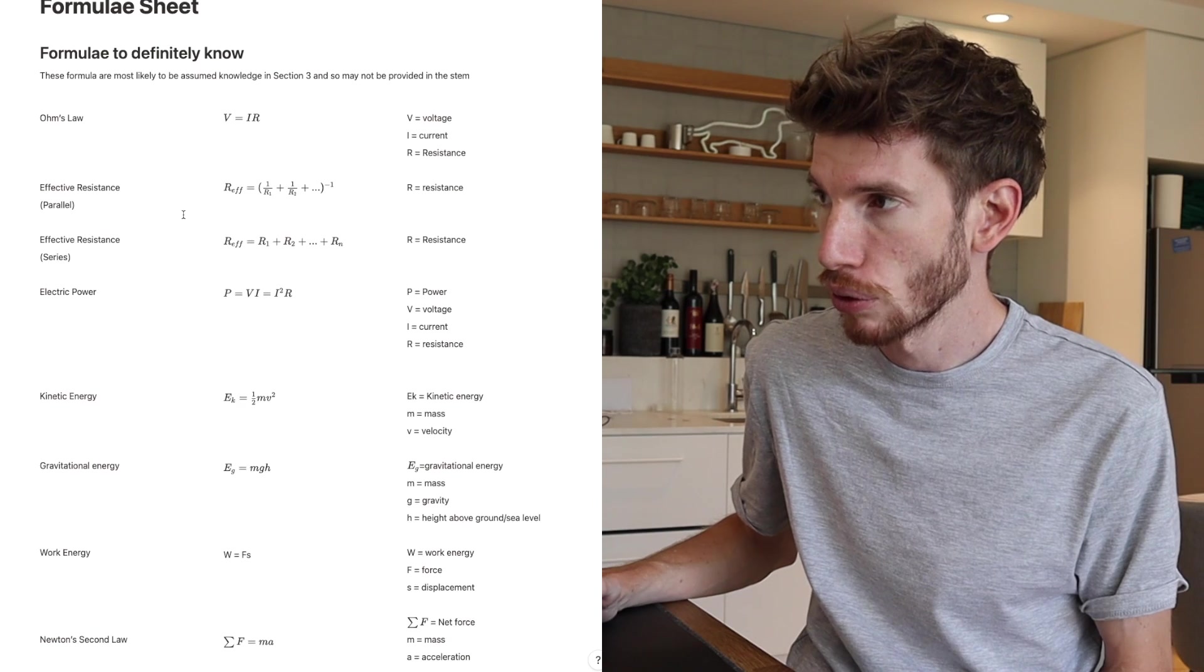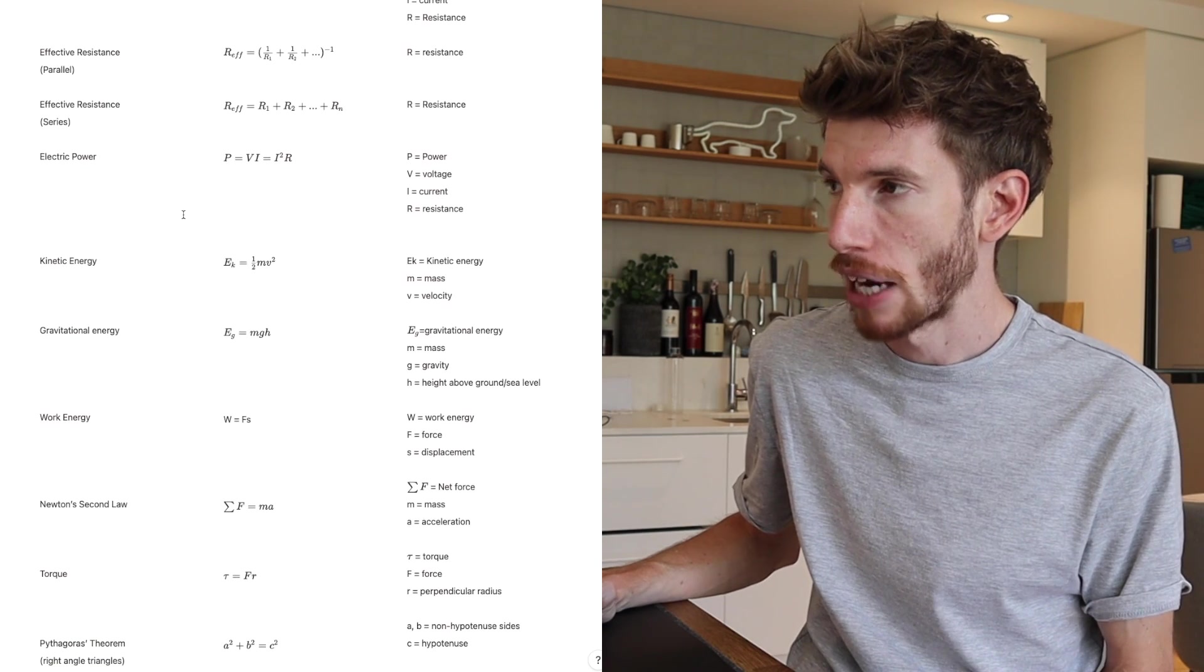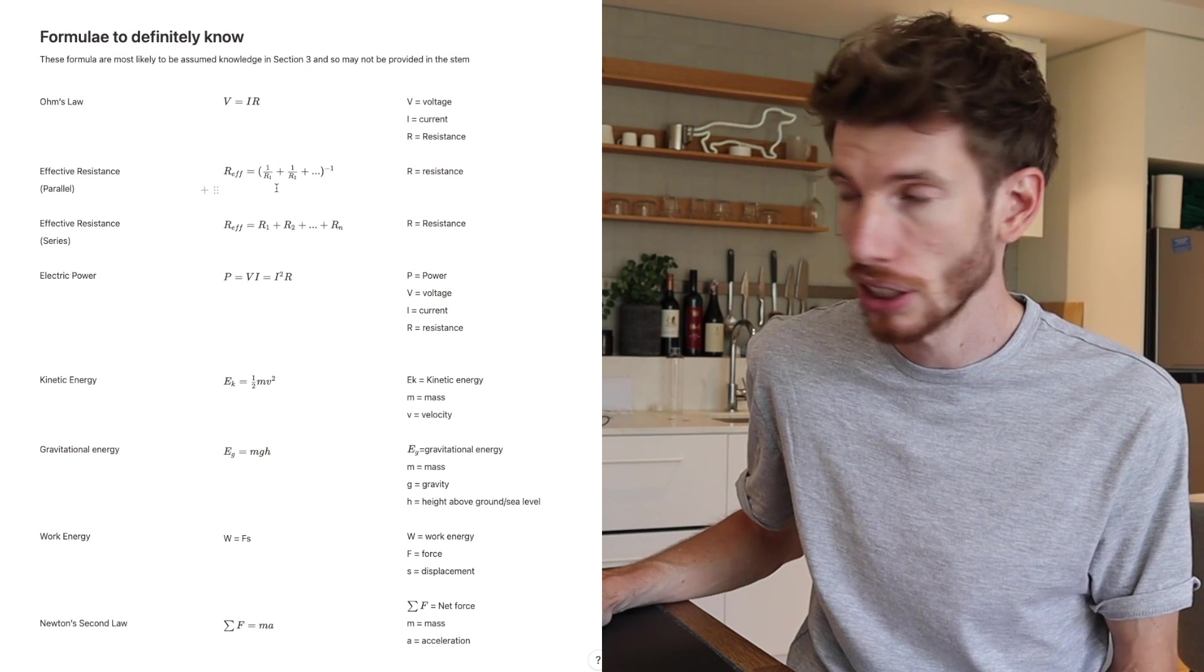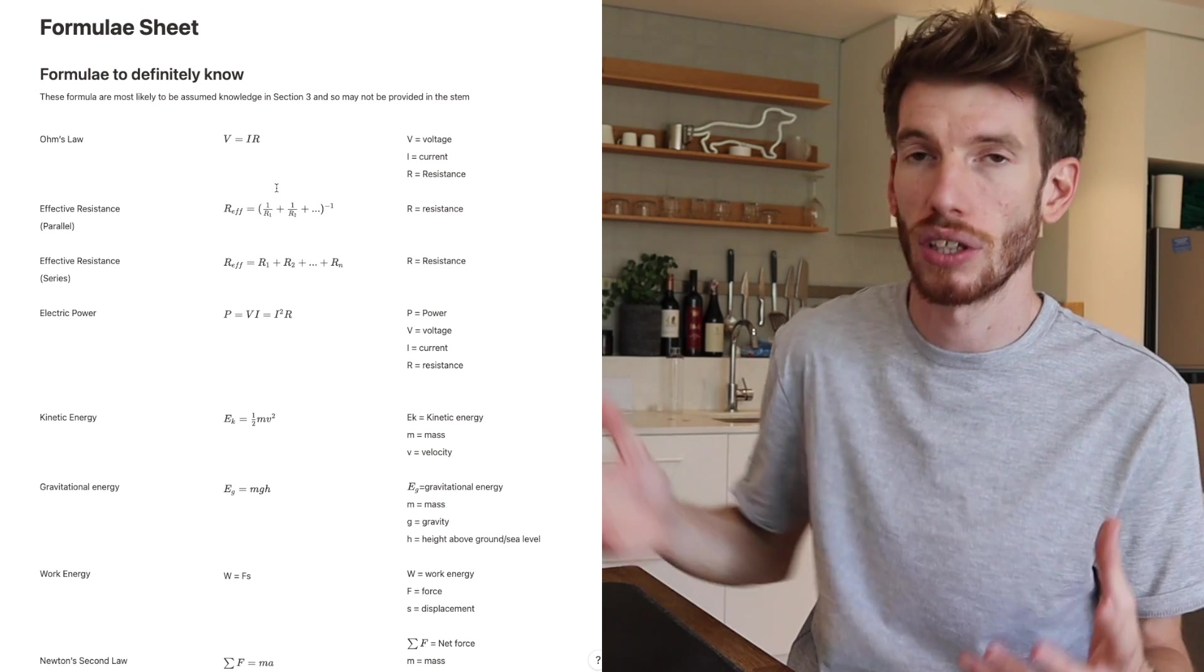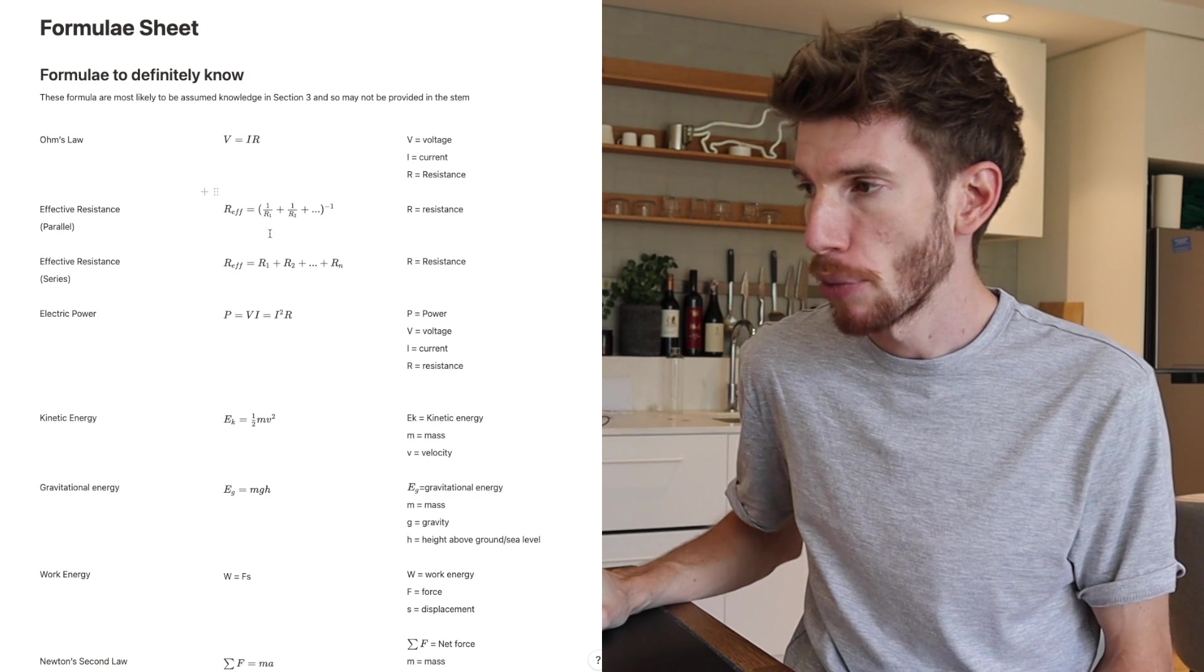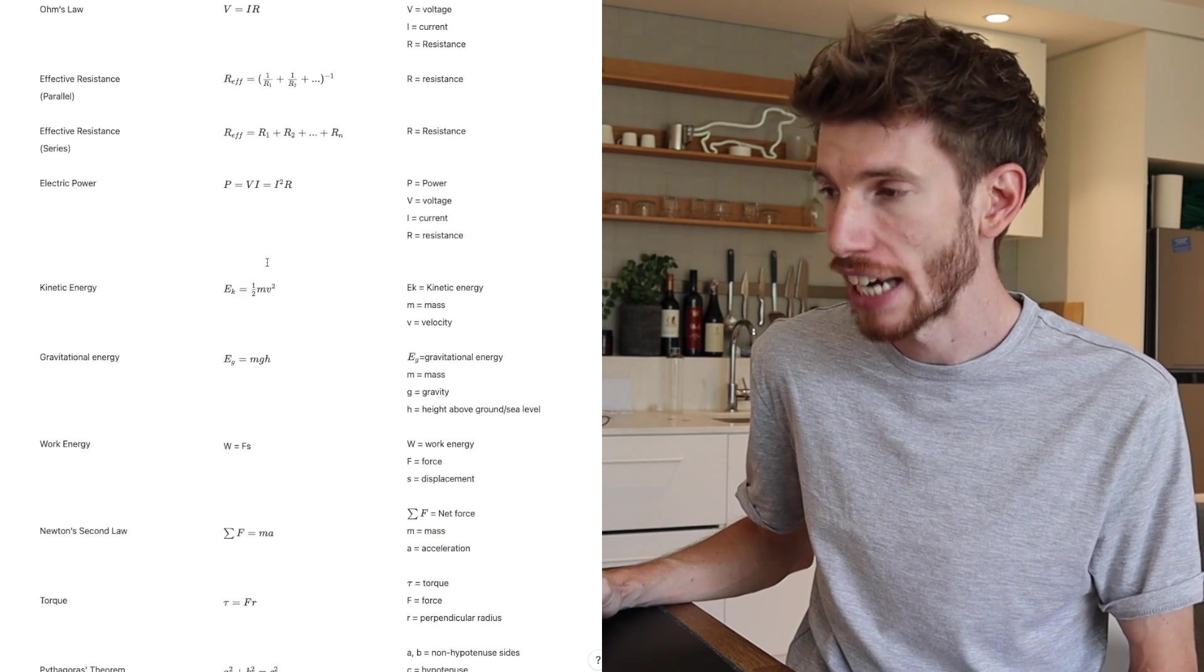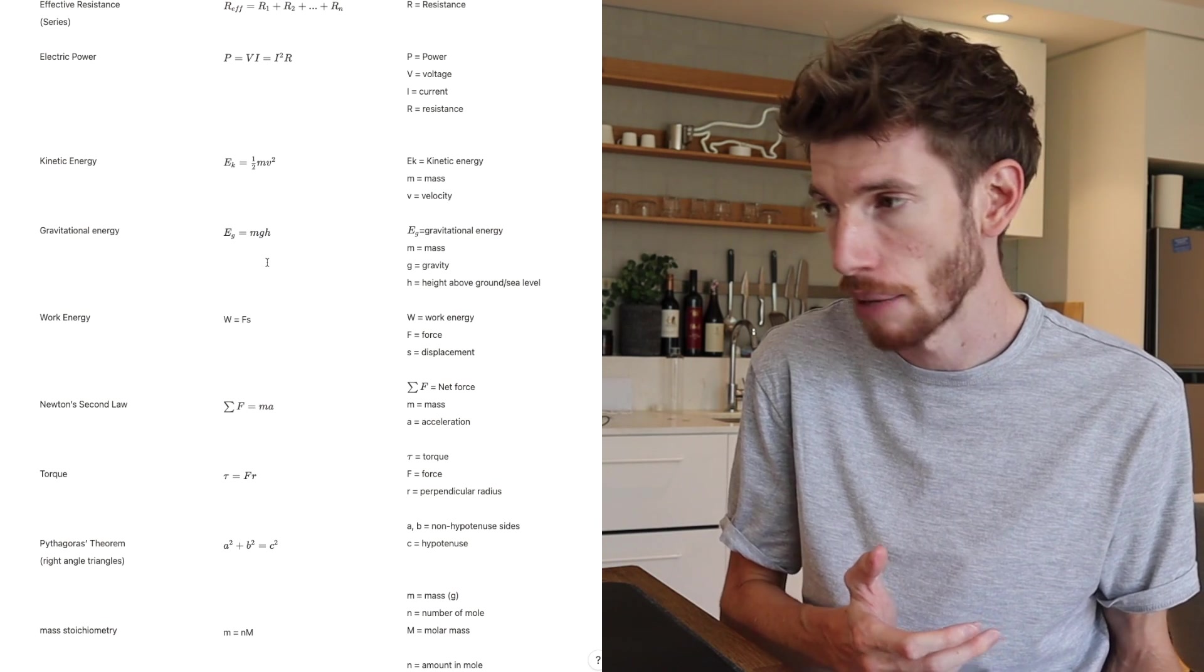You'll notice that in all of them, they're all relatively basic. The more complex looking ones are like effective resistance in a parallel circuit and that kind of thing, but it only looks so complex because there's a pattern to it. Most of them are usually three to four variables at most. Anything more complex and they're pretty much just going to give it to you in the stem.